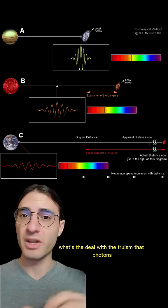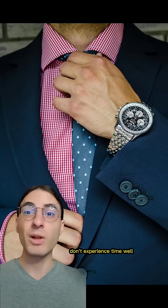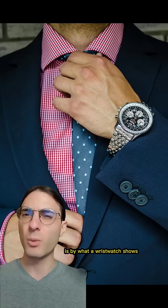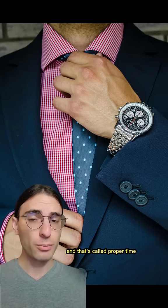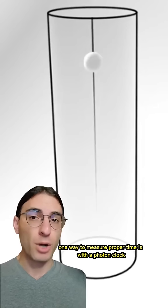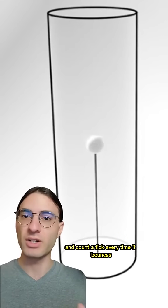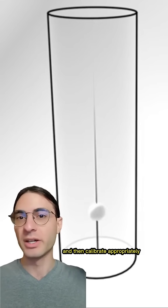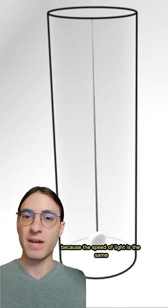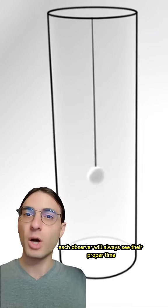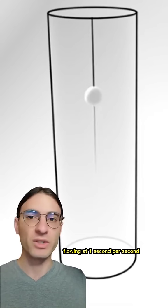So what's the deal with the truism that photons don't experience time? Well, the way that we experience time is by what a wristwatch shows, and that's called proper time. One way to measure proper time is with a photon clock. Bounce a photon between mirrors and count a tick every time it bounces and then calibrate appropriately. Because the speed of light is the same in every reference frame, each observer will always see their proper time flowing at one second per second.